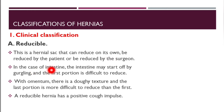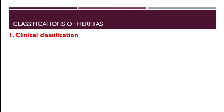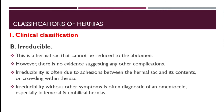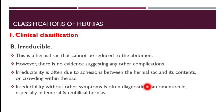In the case of intestine, the intestine may start off by gurgling, and the first portion is usually difficult to reduce. With omentum there is a doughy texture and the last portion is more difficult to reduce than the first. A reducible hernia has a positive cough impulse. An irreducible hernia cannot be reduced back into the abdomen, but there is no evidence of other complications. It is often due to adhesions between the hernial sac and its contents, or crowding within the sac. Irreducibility without other symptoms is often diagnostic of an omentocele, especially in femoral and umbilical hernias.